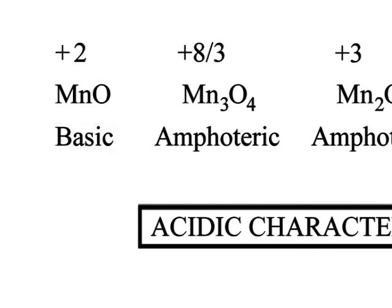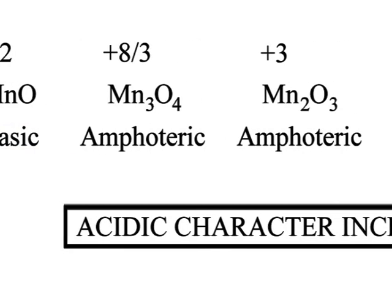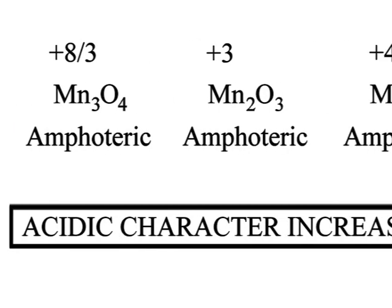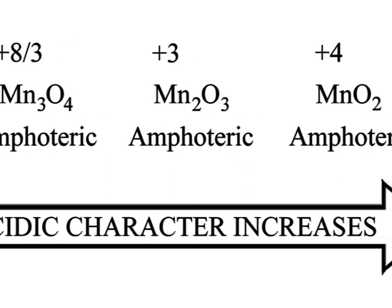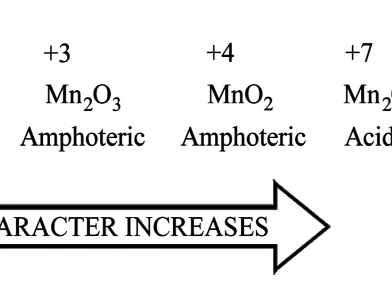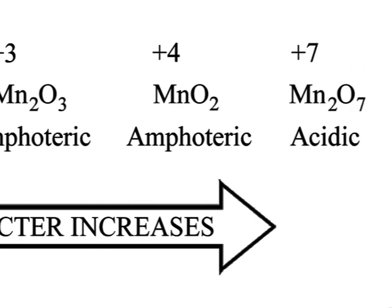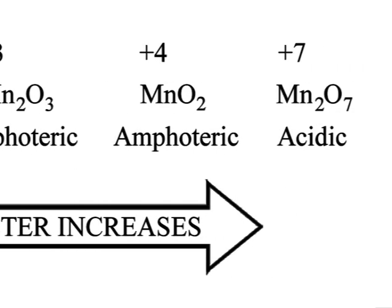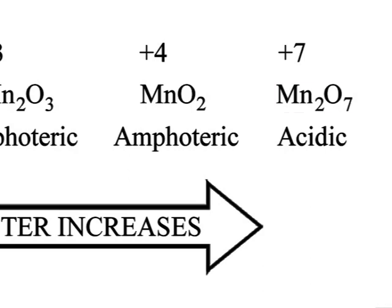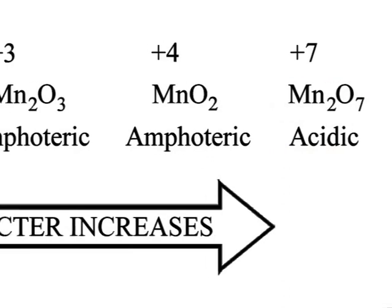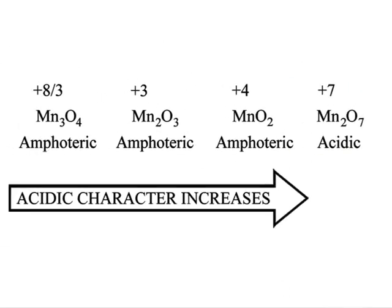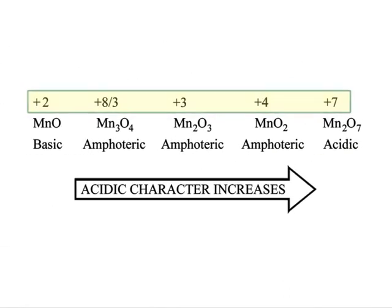Similarly, we can see the nature of other oxides of manganese on the screen. It has been depicted that Mn₂O₇ is acidic in nature. With the increase in oxidation number, acidic character also increases.